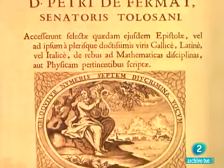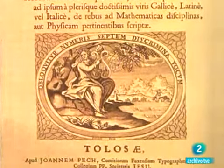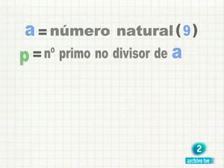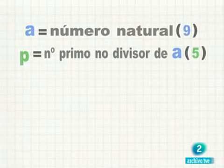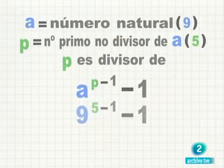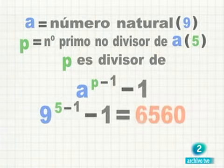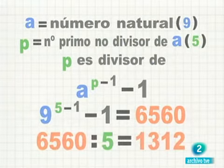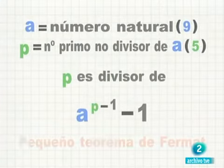Fermat, en una carta enviada a un amigo, le cuenta que había hecho otro descubrimiento sorprendente. Si A es un número natural cualquiera, por ejemplo, 9, y P, un número primo que no es divisor de A, por ejemplo, 5, siempre se cumple que P, en este caso 5, es divisor exacto de A elevado a P menos 1, menos 1. En nuestro caso, 9 elevado a 5 menos 1, menos 1. En efecto, 9 elevado a 4 menos 1 es igual a 6.561 menos 1, igual a 6.560, que es divisible por 5. 6.560 dividido entre 5, 1312.